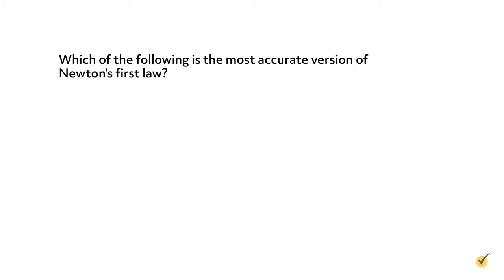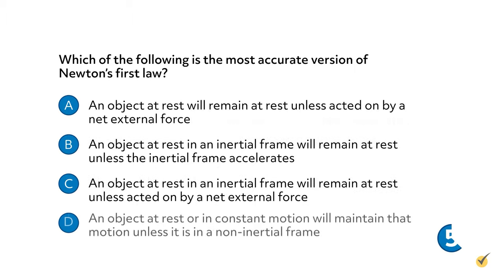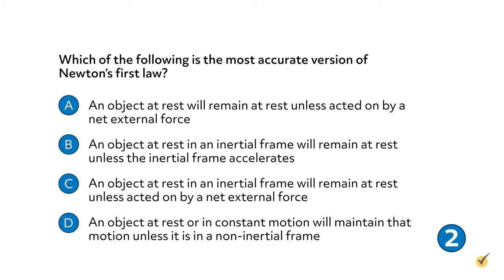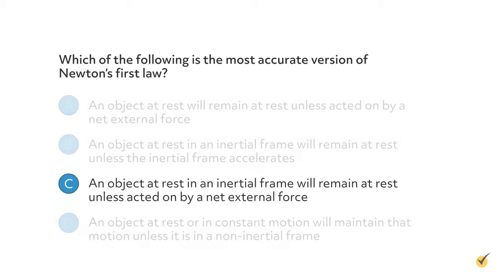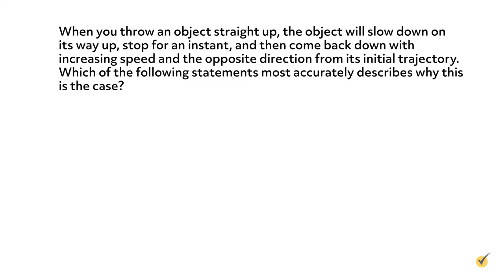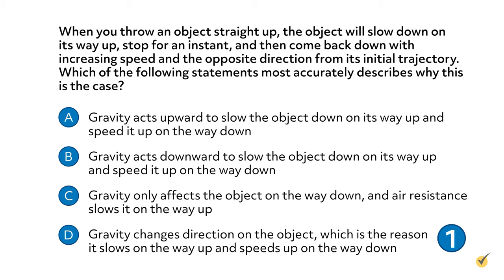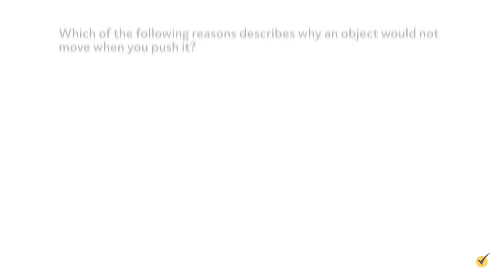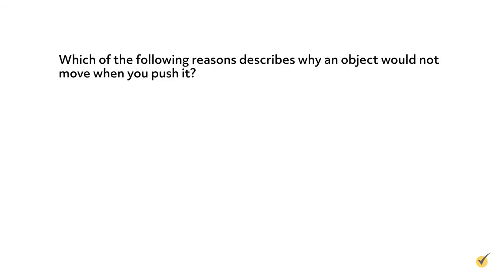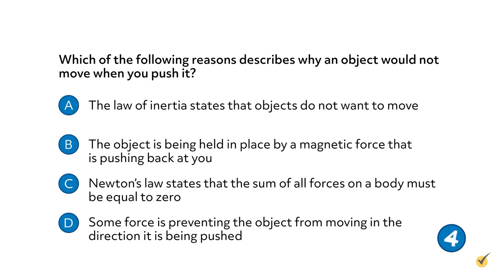Let's wrap up with a few review questions. Number 1: Which of the following is the most accurate version of Newton's first law? The correct answer is C. Number 2: When you throw an object straight up, the object will slow down on its way up, stop for an instant, and then come back down with increasing speed in the opposite direction. Which statement most accurately describes why? The correct answer is B. Number 3: Which of the following reasons describes why an object would not move when you push it? The correct answer is D.